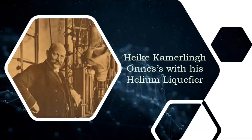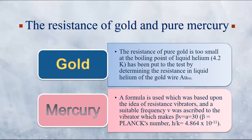Onnes was the person who liquefied helium for the very first time in 1908. He didn't stop there and continued his experiments with metals like gold and pure mercury. Although gold was not superconducting at high temperature, it was found to be superconducting at low temperature. The resistance of pure gold is too small at the boiling point of liquid helium, and the resistance of mercury was found with the help of a formula deduced by the idea of resistance vibrator.